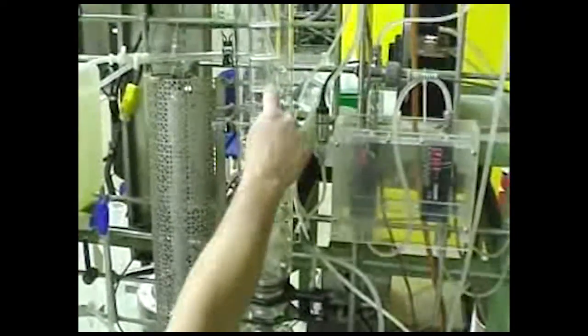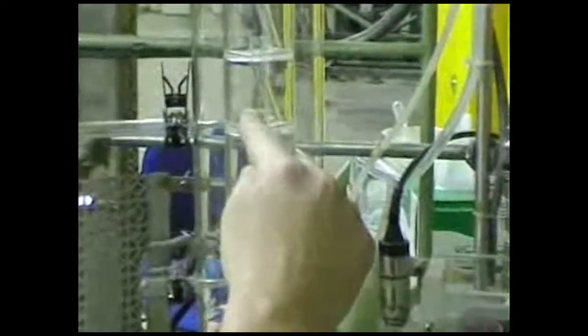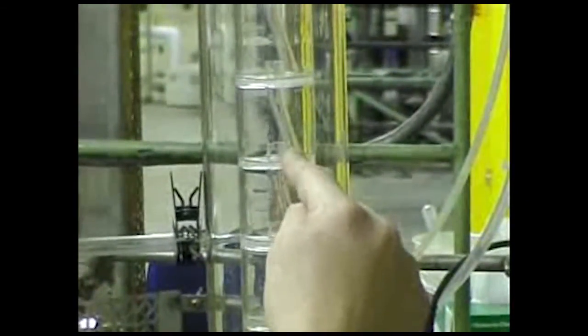What we learn in separations is that in a downcomer, you have a section of liquid, and then on top of that, you have a section of aerated liquid, and then on top of that, you have your clear vapor that then extends up into the tray above.